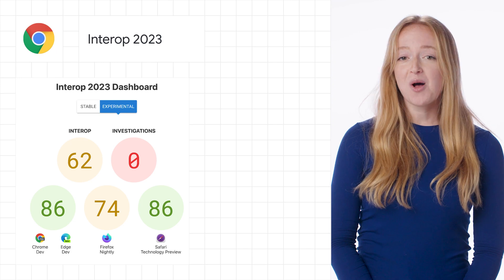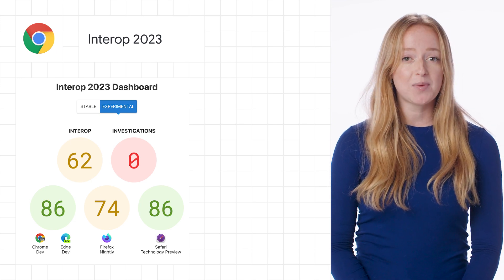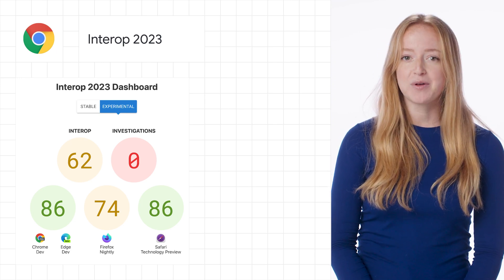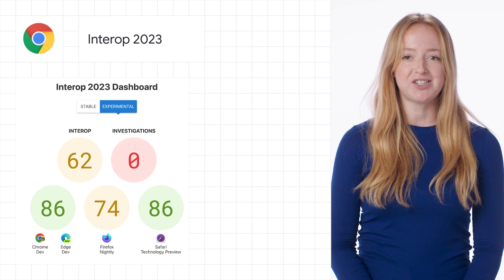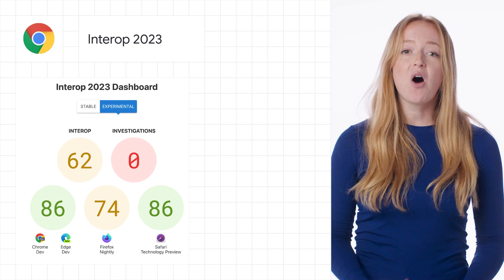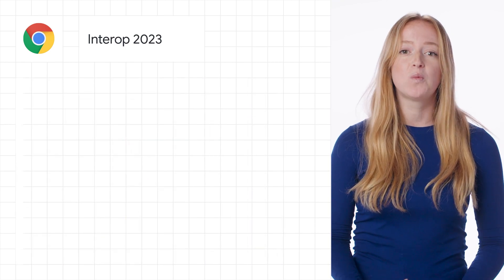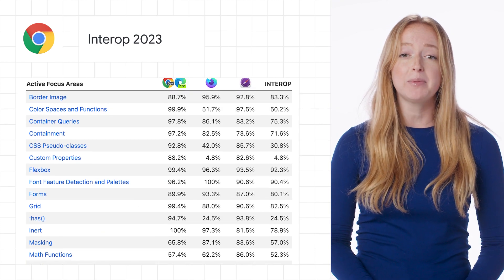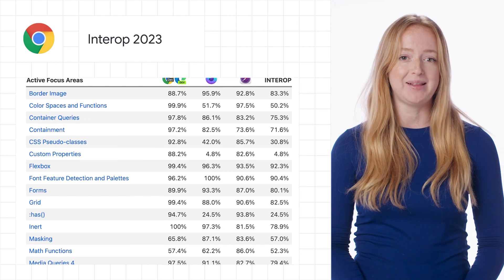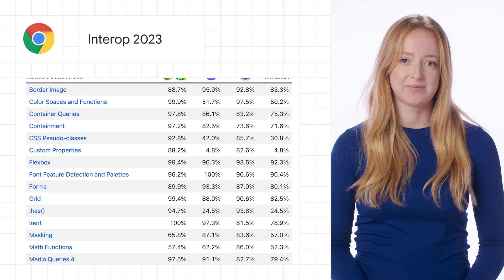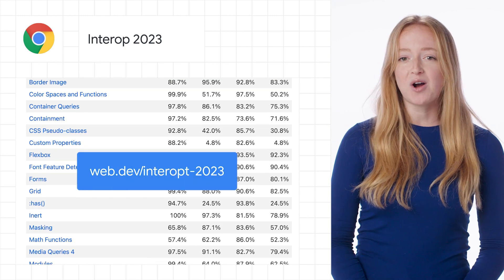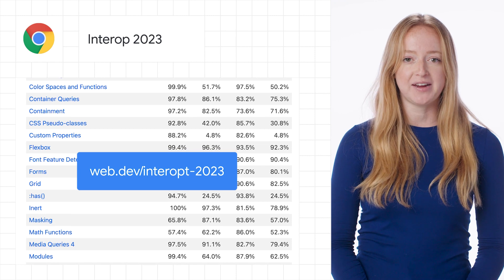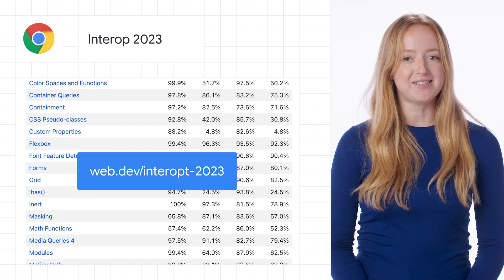Chrome also announced Interop 2023, a collaborative multi-year initiative where all major browser vendors are again working together to solve the top browser compatibility issues. You can learn more about our focus areas of 2023 on web.dev.